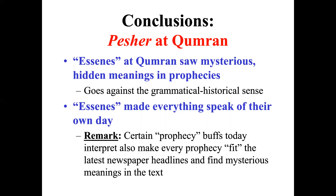Certain prophecy enthusiasts today make exactly the same mistake — taking every prophecy of scripture and making it fit the latest newspaper headlines to find mysterious meanings in the text. I remember as a young Christian there was a preacher on the radio who absolutely insisted that Henry Kissinger, then Secretary of State under Richard Nixon, was the Antichrist. It does not appear that he is ever going to prove to be the Antichrist. If you try to make the Bible fit the latest newspaper headlines, you will come up with interpretations that fit that preconception. They did that at Qumran, and there are people who interpret the Bible that way today.